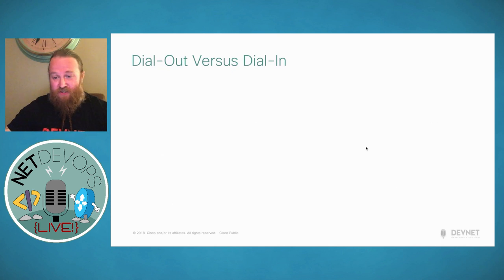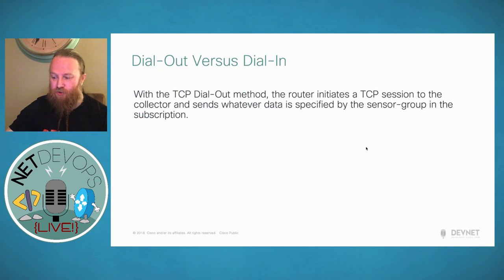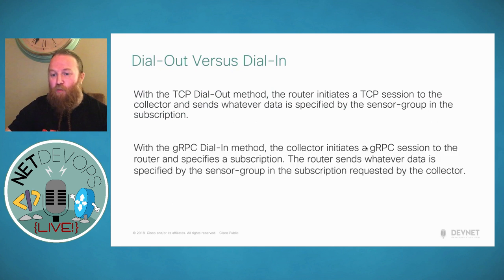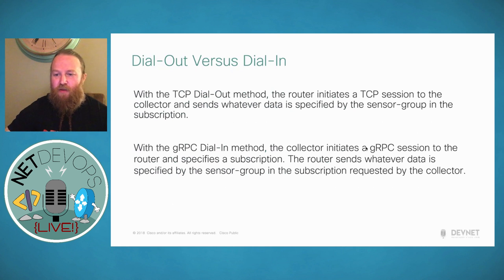For encoding, the router can deliver telemetry in different flavors of GPB — compact and self-describing GPB. Compact GPB is the most efficient encoding but requires a unique .proto file for each YANG model that is streamed. Self-describing GPB is less efficient but uses a single .proto file to include the YANG models, because the keys are passed as strings within the .proto file.